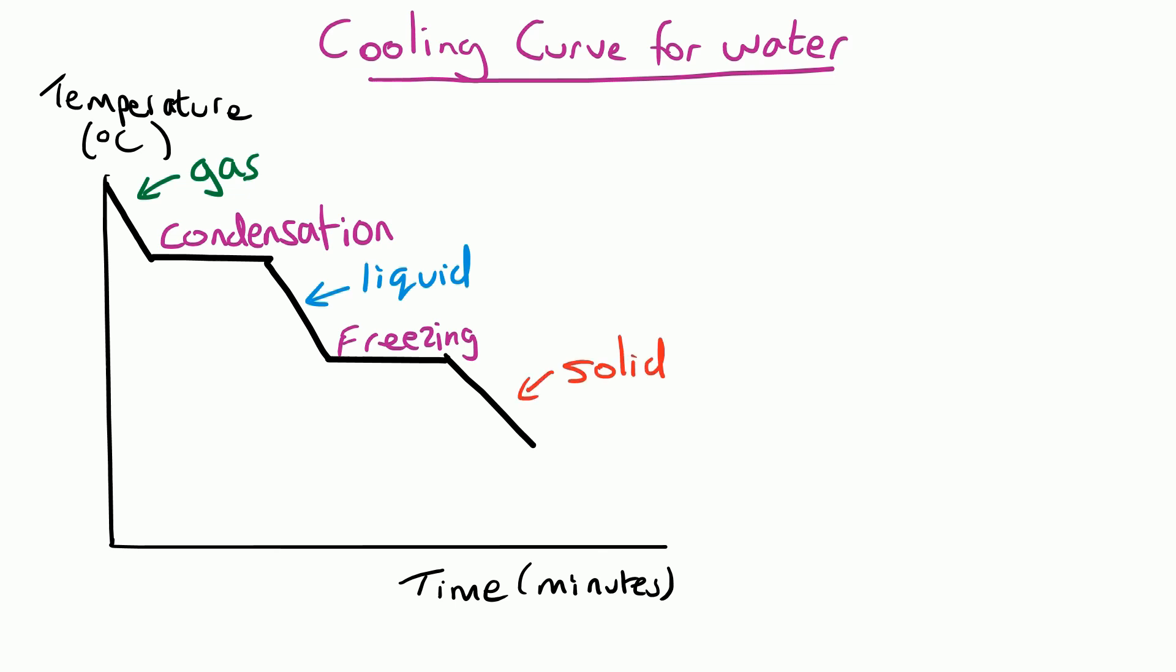So once again, we can put some actual numbers on this. The temperature that a gas changes back into a liquid is the same temperature that it changes from a liquid to a gas, so it's at the boiling point. That would be a hundred degrees for water. Similarly, the temperature it changes from a liquid to a solid is the same temperature it goes from a solid to a liquid, so that would be zero degrees again. Make sure you can label the different parts of this cooling curve.